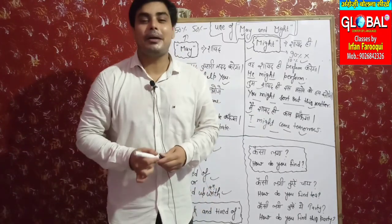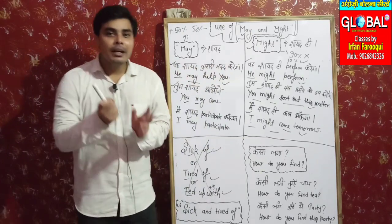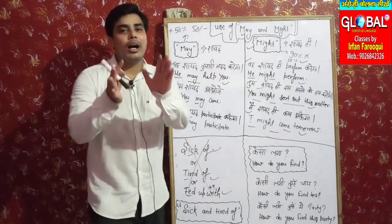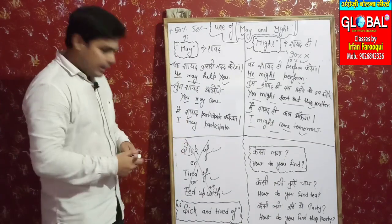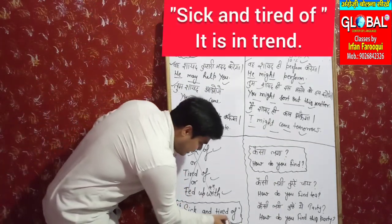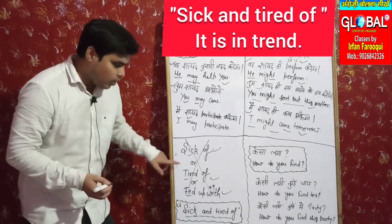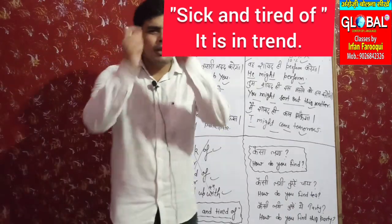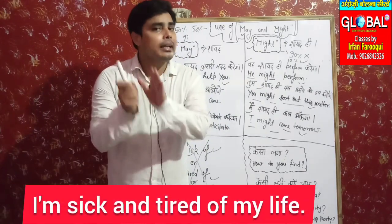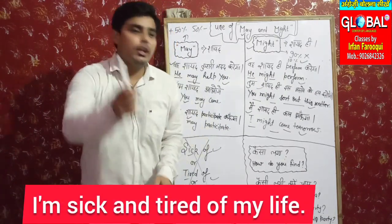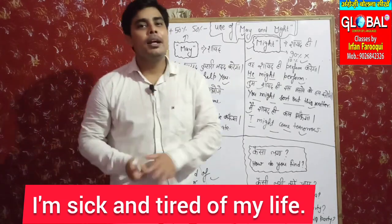You don't have to use all three separately every time — I'm teaching them so you understand what's being said if someone uses them. But what's really trendy and widely used is 'sick and tired of.' This combines both words with one 'of' at the end. So 'main tang aa gaya hoon apni life se' becomes 'I am sick and tired of my life.'